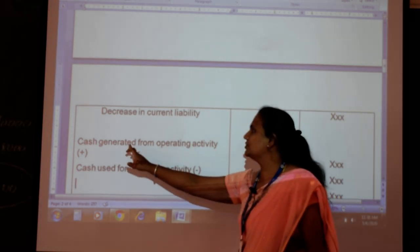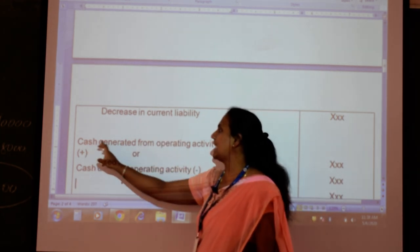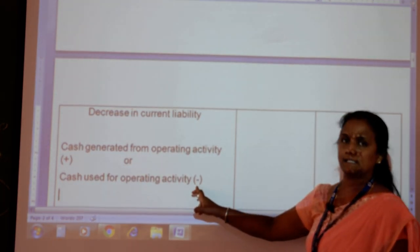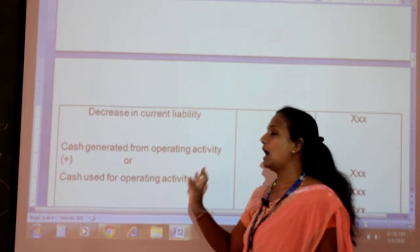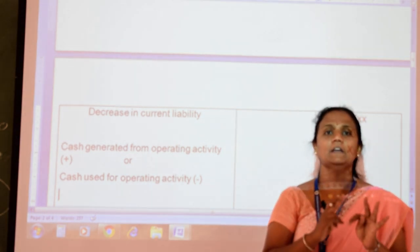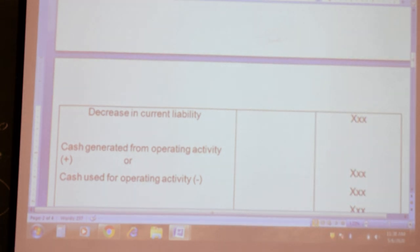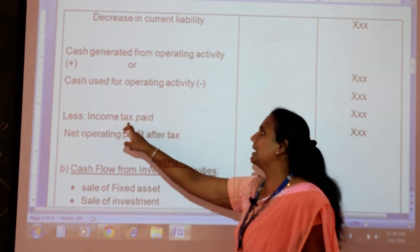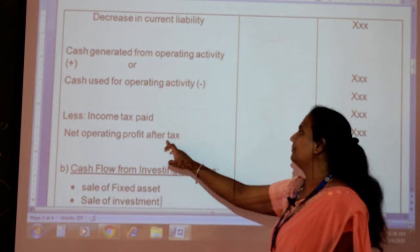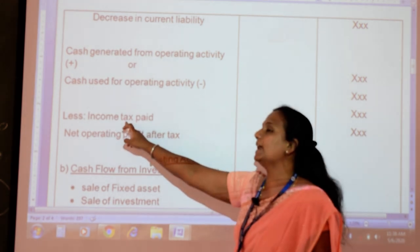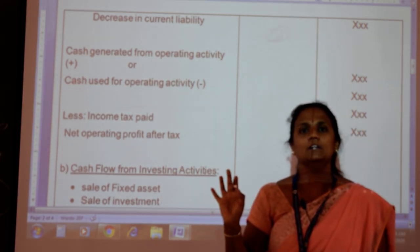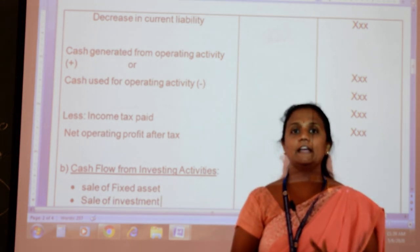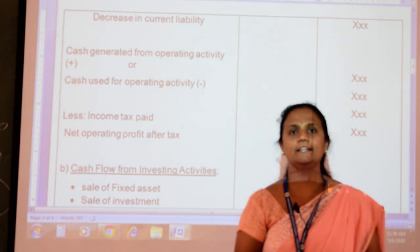By doing this, you get cash generated from operating activity. If positive, write 'cash generated from operating activity'; if negative, write 'cash used for operating activity.' Then the last adjustment: minus the tax to get net operating profit after tax. So this is the complete format with three headings — operating, investing, and financing activity. A small problem will be explained to finish the chapter.